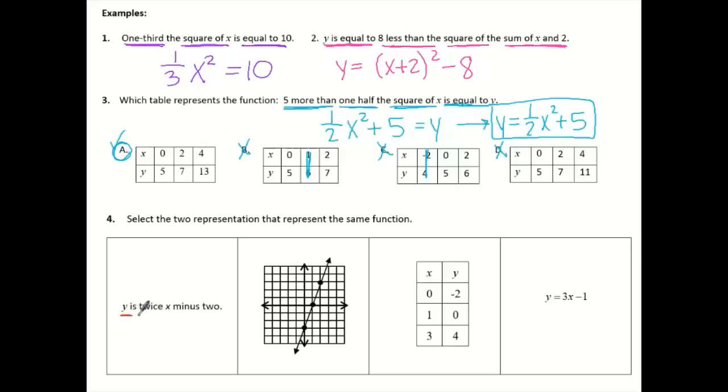Y is twice X minus 2. So Y is, is means equals, so Y is twice X minus 2. So now we have an equation, a graph, a table, and an equation.